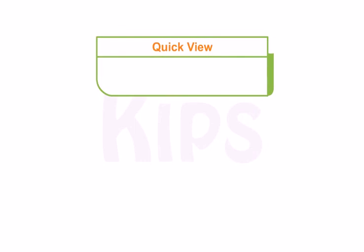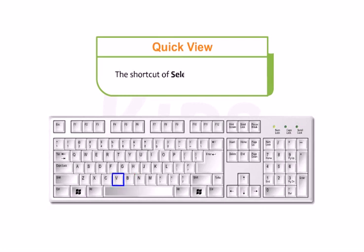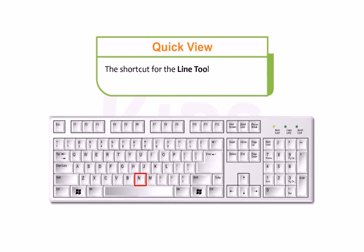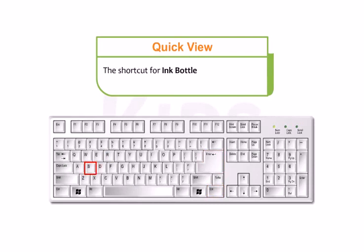Let me share some interesting shortcut tips with you. The shortcut key of Brush Tool is B. The shortcut of Selection Tool is V. The shortcut for the Pen Tool is P. The shortcut of the Oval Tool is O. The shortcut for the Line Tool is N. And for the Rectangle Tool it is R. The shortcut key to preview the animation is Ctrl+Enter. The shortcut for Ink Bottle Tool is S. And for Paint Bucket Tool it is K.